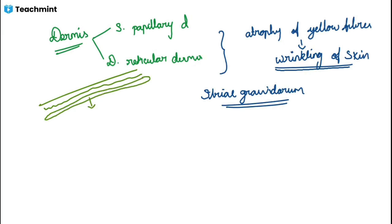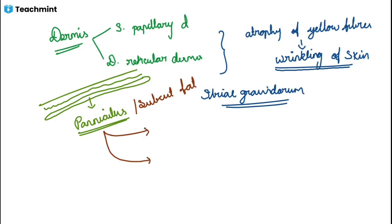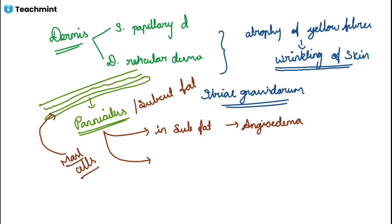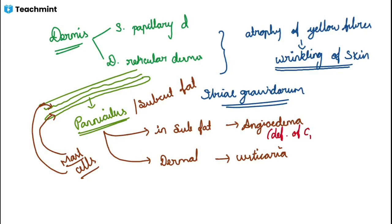Below the dermis we have subcutaneous fat, also called fascia. The subcutaneous fat is also called panniculus. One important thing: in angioedema versus urticaria, both are mainly because of involvement of mast cells releasing histamine. If the mast cell breakdown occurs in the subcutaneous fat layer, it will lead to angioedema, and if it occurs in the dermal layer, it leads to urticaria. There is also a hereditary angioedema related to C1 deficiency.